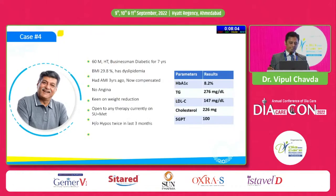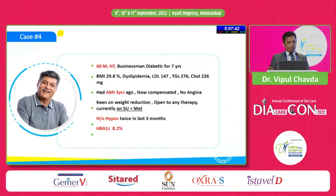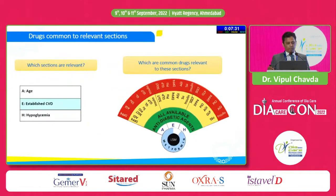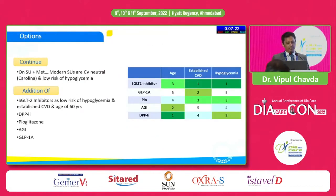Case 4: a 60-year-old hypertensive businessman, 7-year duration of diabetes, BMI 29, dyslipidemia, MI 3 years ago, now compensated with no current angina, keen on weight reduction, open to any therapy. Currently on sulfonylurea and metformin, with two episodes of hypoglycemia in the last 3 months, A1C 8.2. Key factors: hypertension, middle age, MI 3 years back, on sulfonylurea with hypoglycemia at A1C of 8.2. Using the RSSDI Therapeutic Wheel intelligently, we consider age, established CVD, and hypoglycemia. Options include SGLT2 inhibitor and GLP-1 RA.